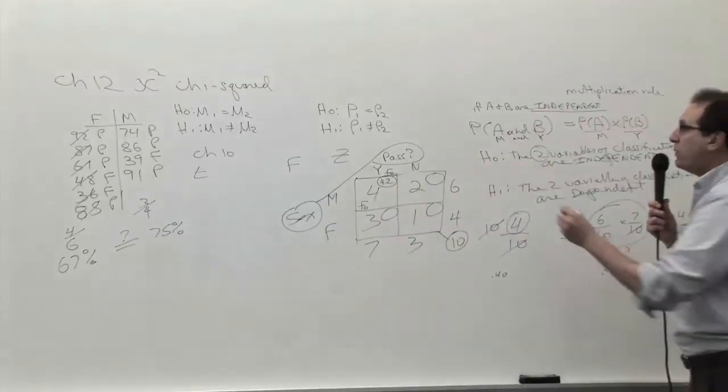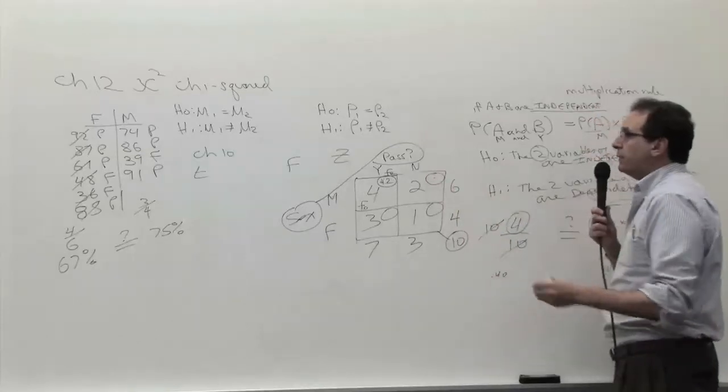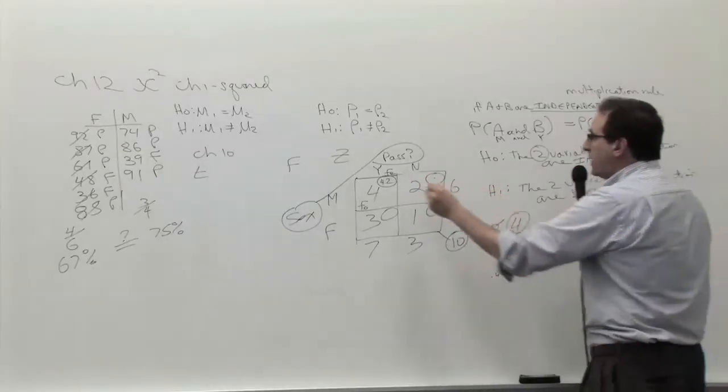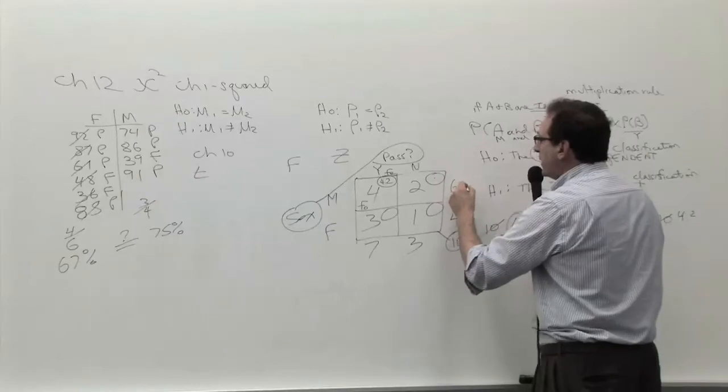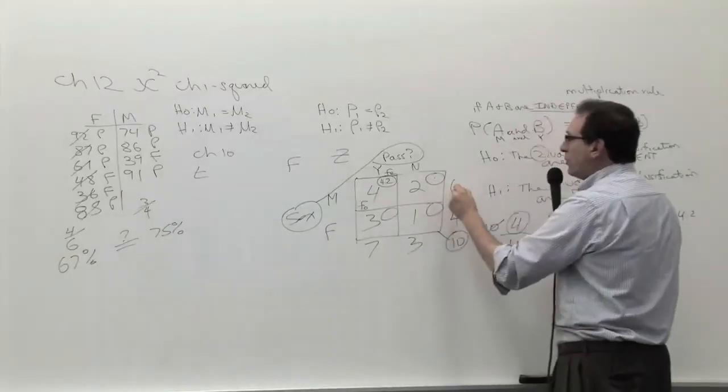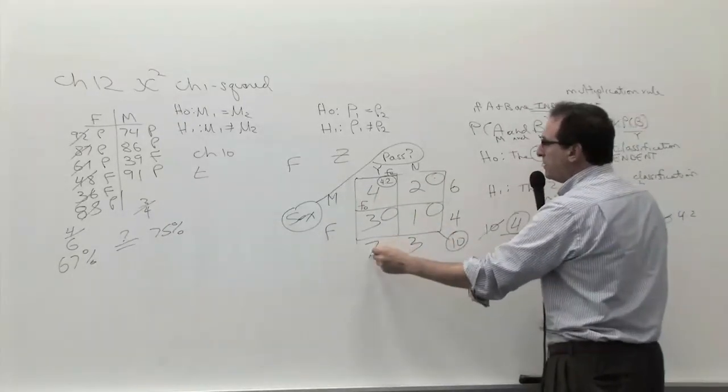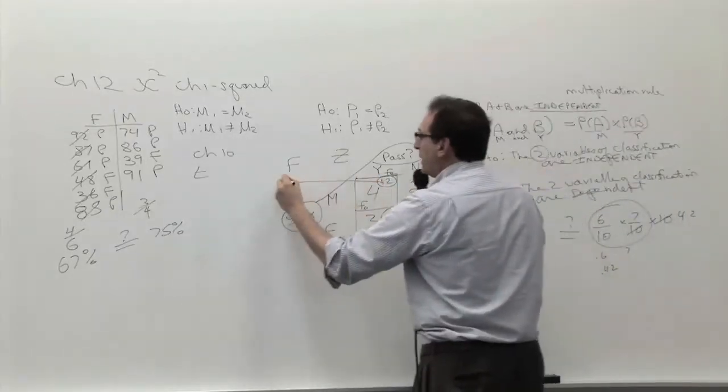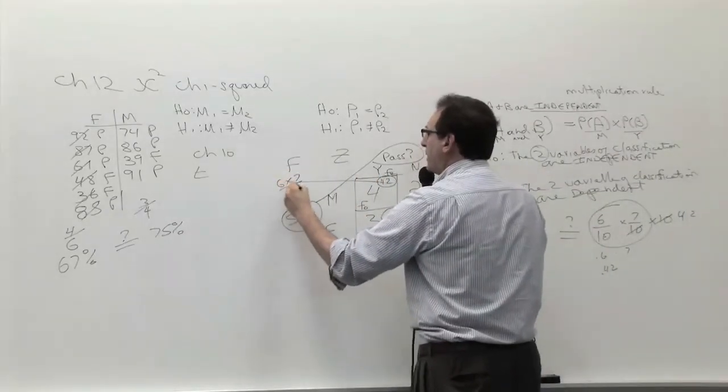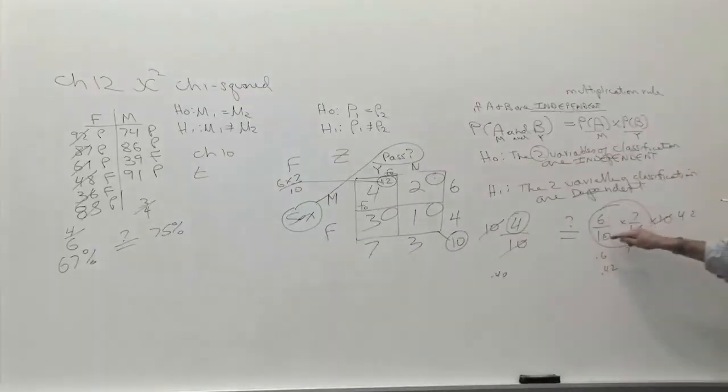So how many people would we expect in this particular box? We actually got two, but the formula says you multiply the number in the row, which is the row total, which is six, times seven divided by ten. By the way, this number here came from six times seven divided by ten.